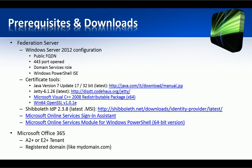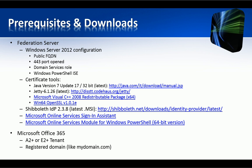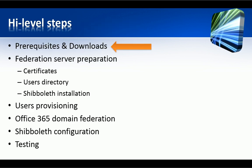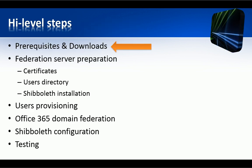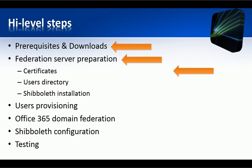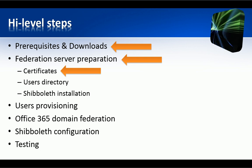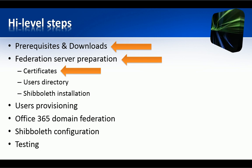we need an Office 365 active subscription containing the domain that we are going to federate. We need an academic or enterprise level plan in order to do this. But now, let's go and prepare the federation server starting from the certificates. In fact, as I said, Shibboleth runs on Apache on a secure channel so we must install an SSL certificate on it.